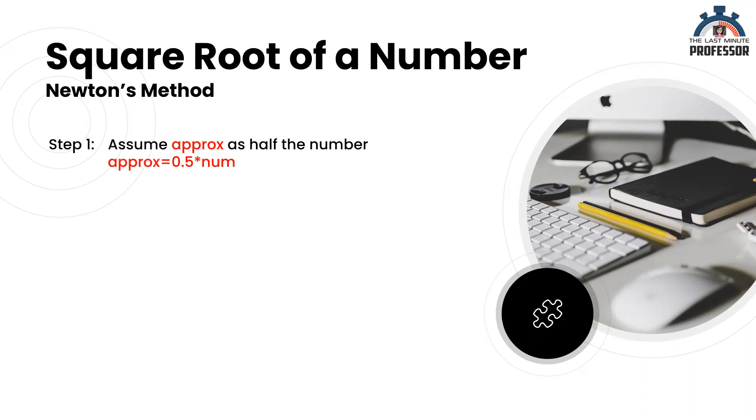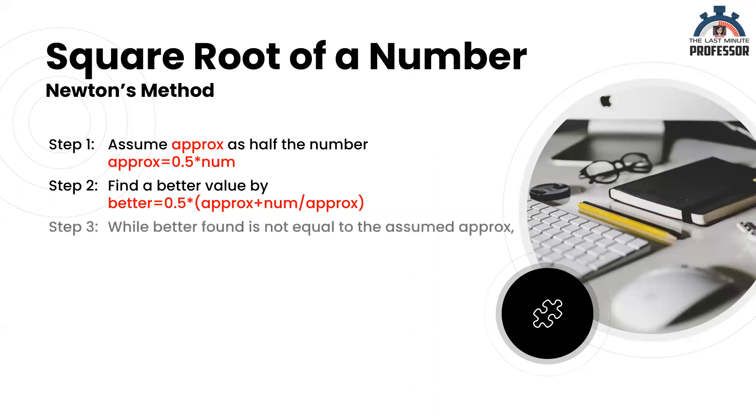Then we shall attempt to find a better answer than this assumed approximate value. By the formula, better is equal to half of approx plus num by approx. Change approx value and find better while better is not equal to the assumed approx value.